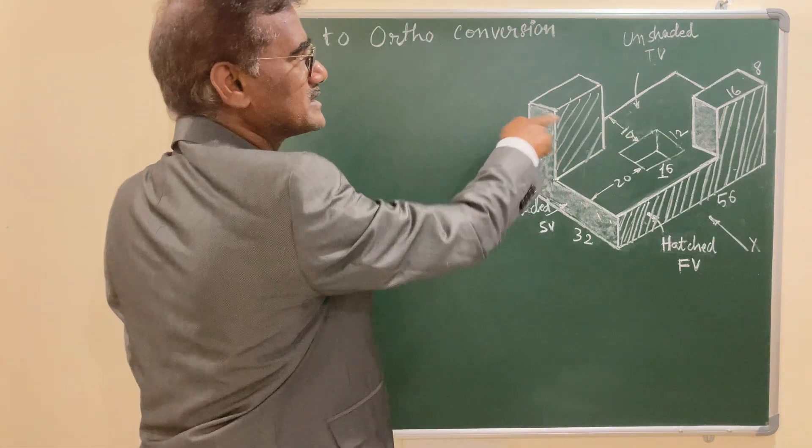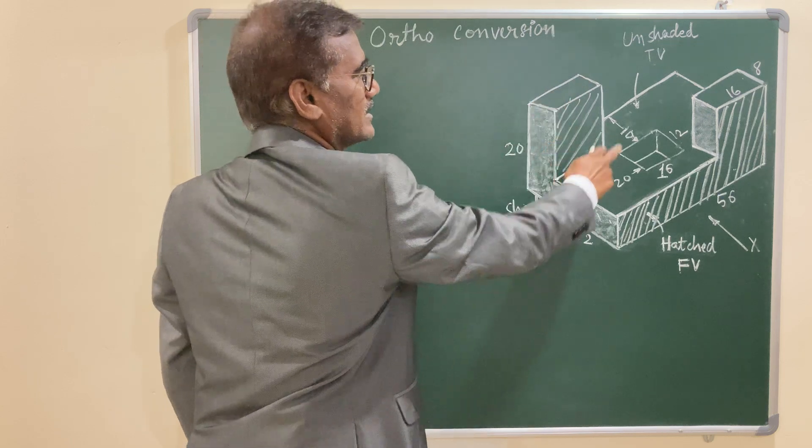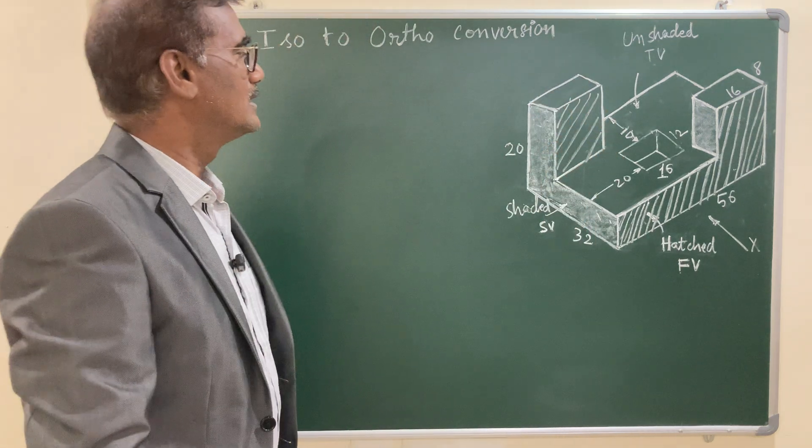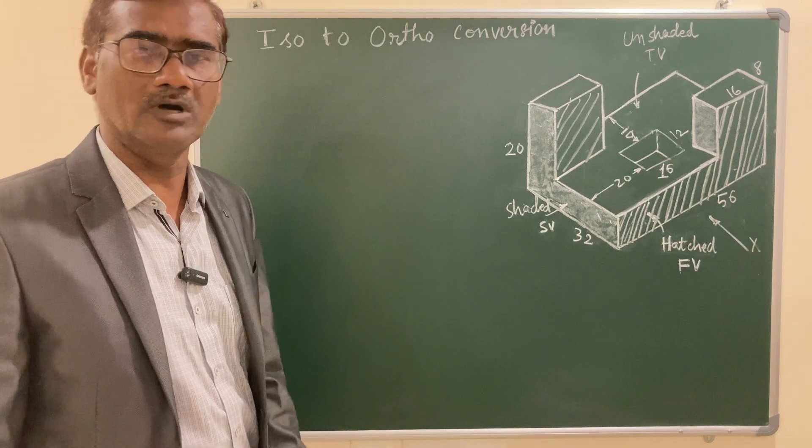And top view, unshaded view is given. That is, here it is the leftover part you can see from the top. So as you know, this will be worked out by box method, rectangular box method.